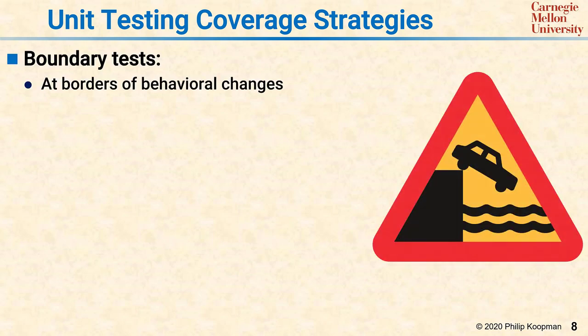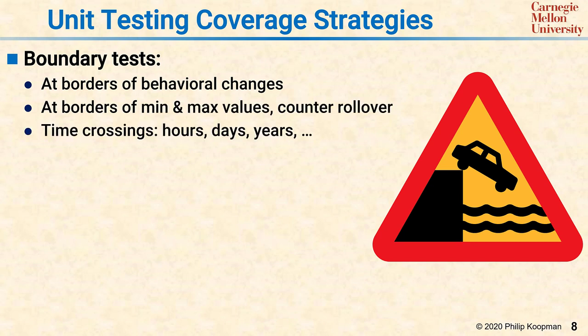There are a number of other possible considerations when considering unit testing coverage. A common criteria for good unit tests is to exercise boundaries, known as boundary testing. Boundary testing probes the borders of behavioral changes. As examples, if you have a minimum acceptable value, you would check one notch below the minimum, exactly at the minimum, and one notch above the minimum to make sure there are no unexpected results. That includes minimum and maximum values, counter rollovers, wraparounds, overflows, and those sorts of things.